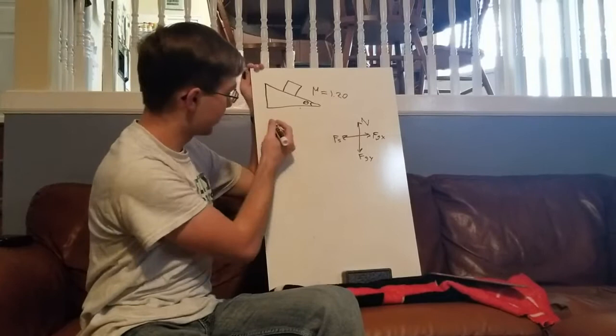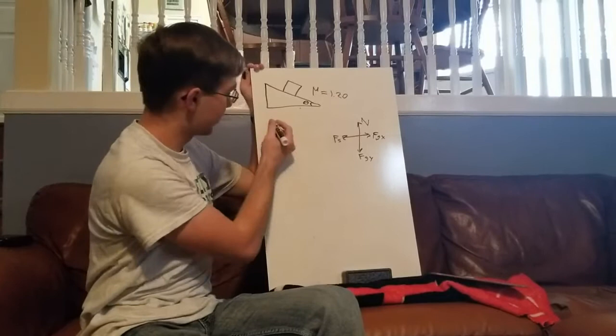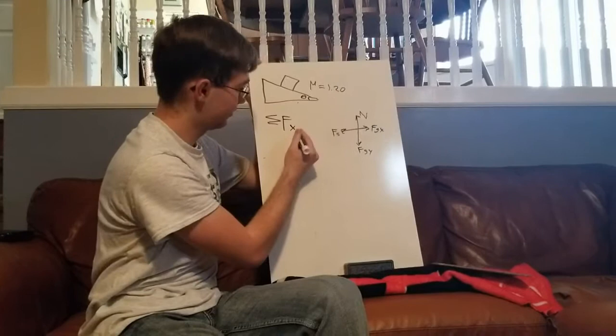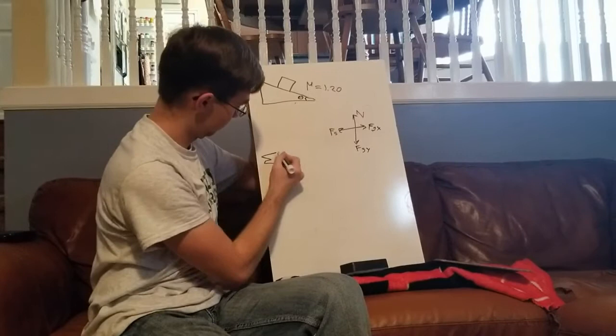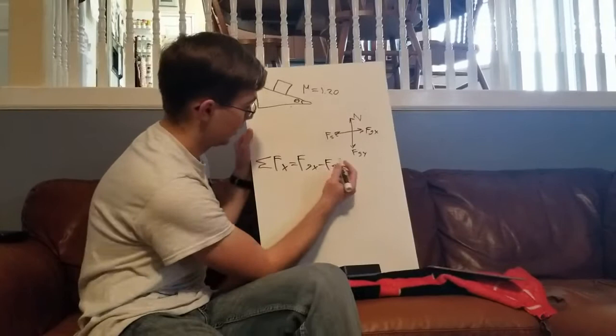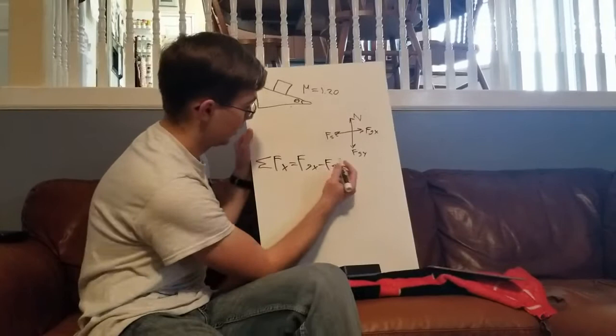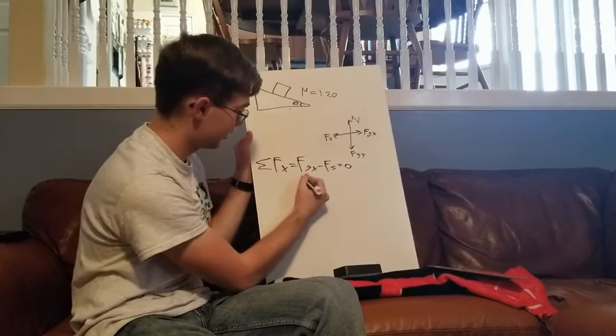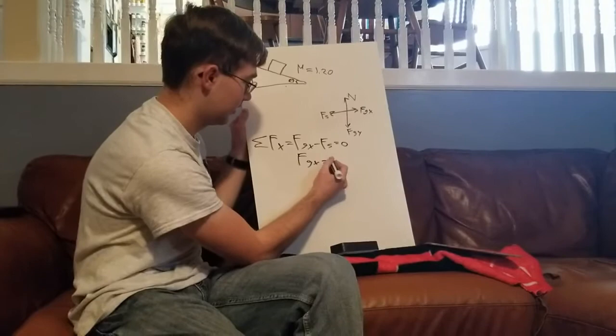Now, I'll do Newton's second law for the x direction. The sum of forces in the x direction equals the force of gravity in the x direction minus the force of static friction. Again, we're not accelerating so it sums up to zero. So the force of gravity in the x direction equals the force of static friction.